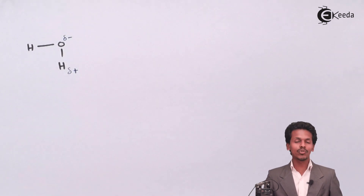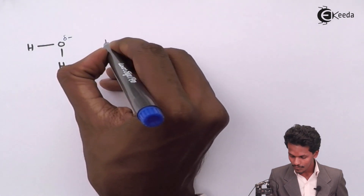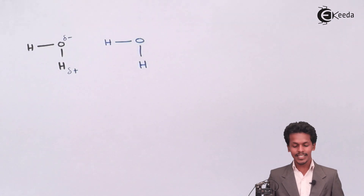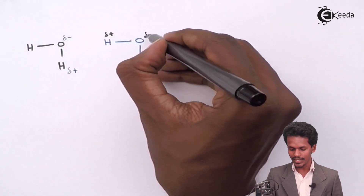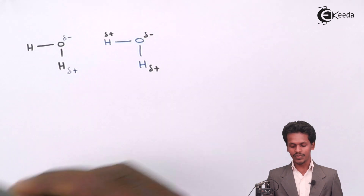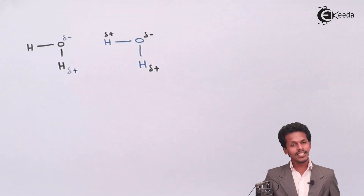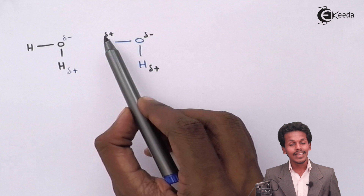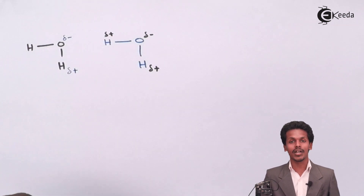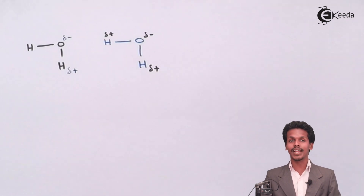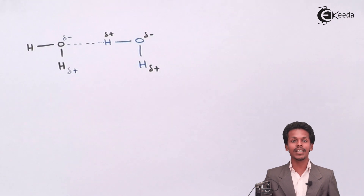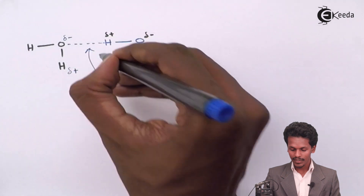Now suppose this H₂O molecule interacts with another H₂O molecule. In this case, one hydrogen has a partially positive charge, the oxygen has a partially negative charge, and the other hydrogen also has a partially positive charge. When these two molecules interact, the oxygen — which is highly electronegative — will try to attract the hydrogen atom of the other molecule, which is electropositive. Both are of opposite charge and attract each other. This dipole-dipole interaction involves hydrogen atoms, so this interaction between an electronegative atom and the hydrogen atom of another molecule gives hydrogen bonding.